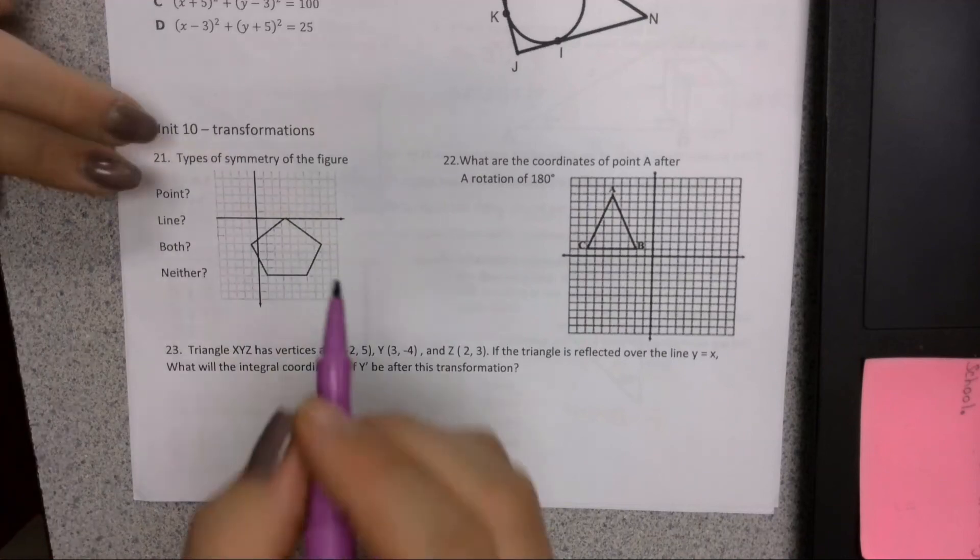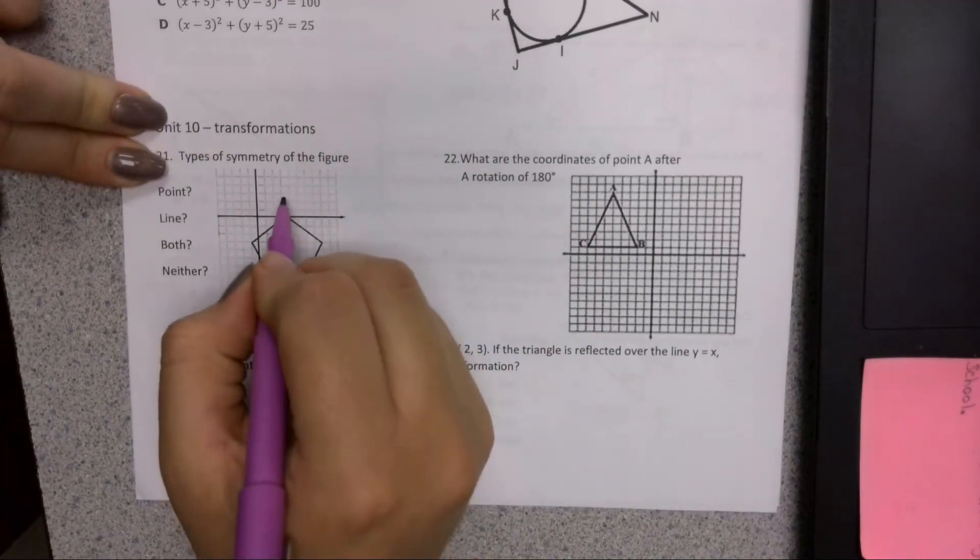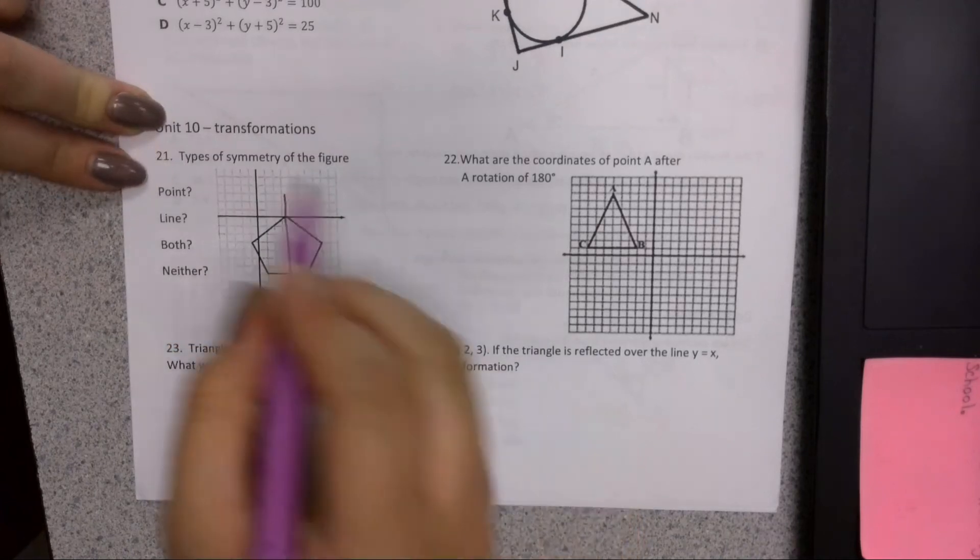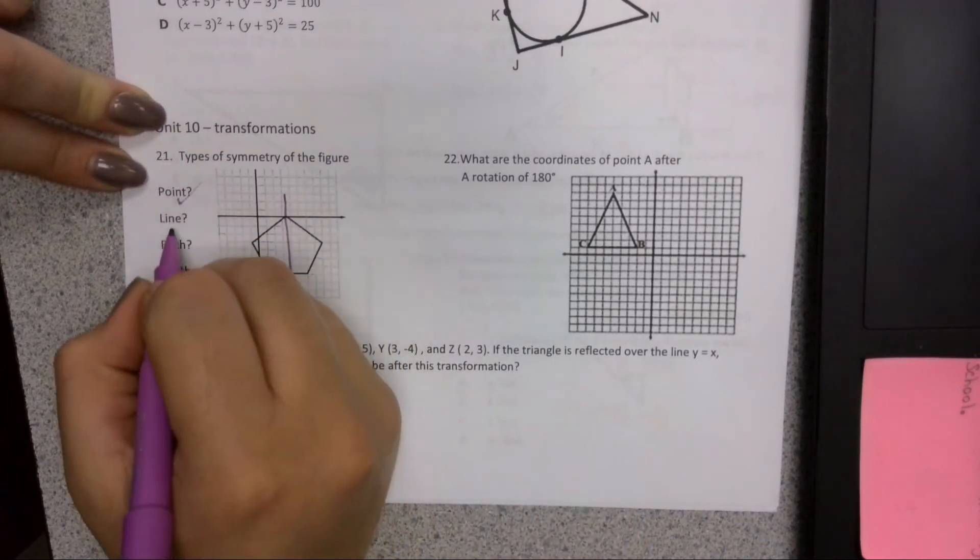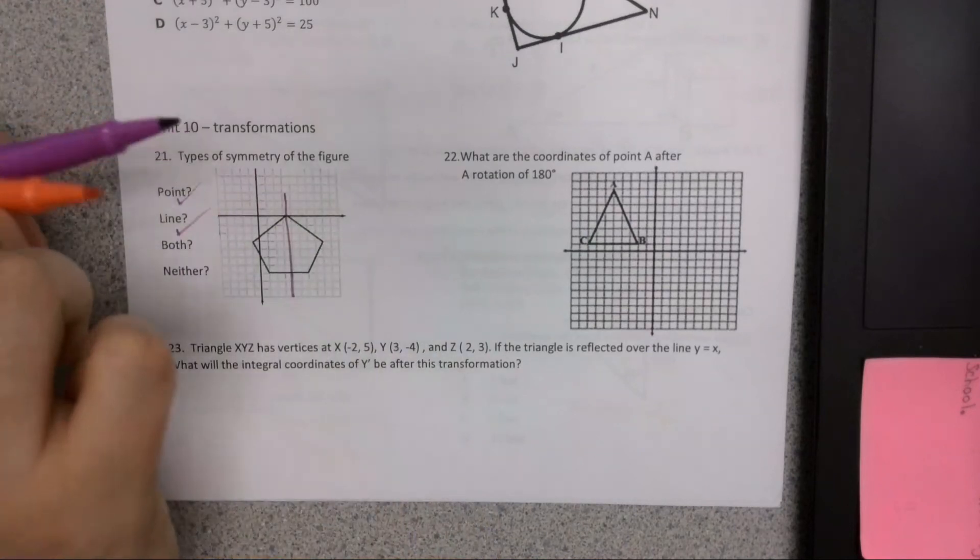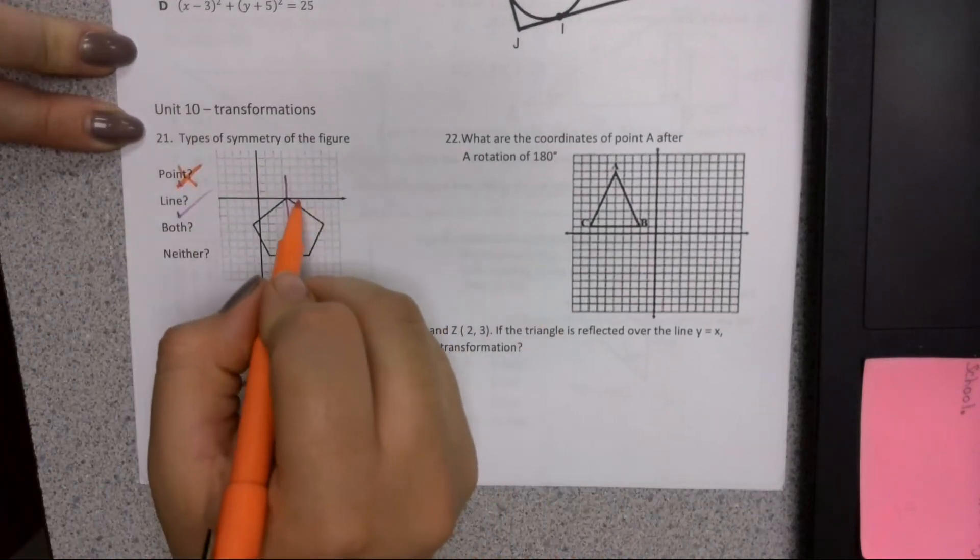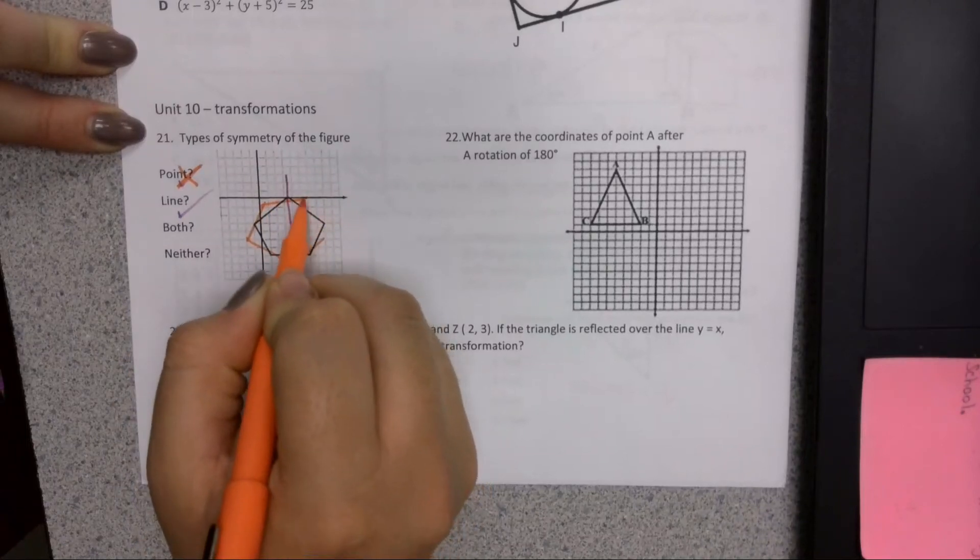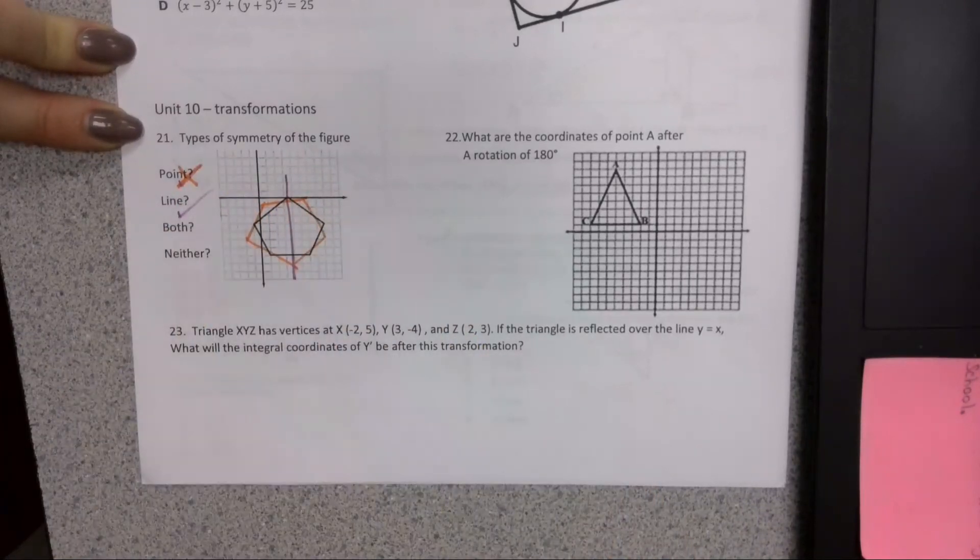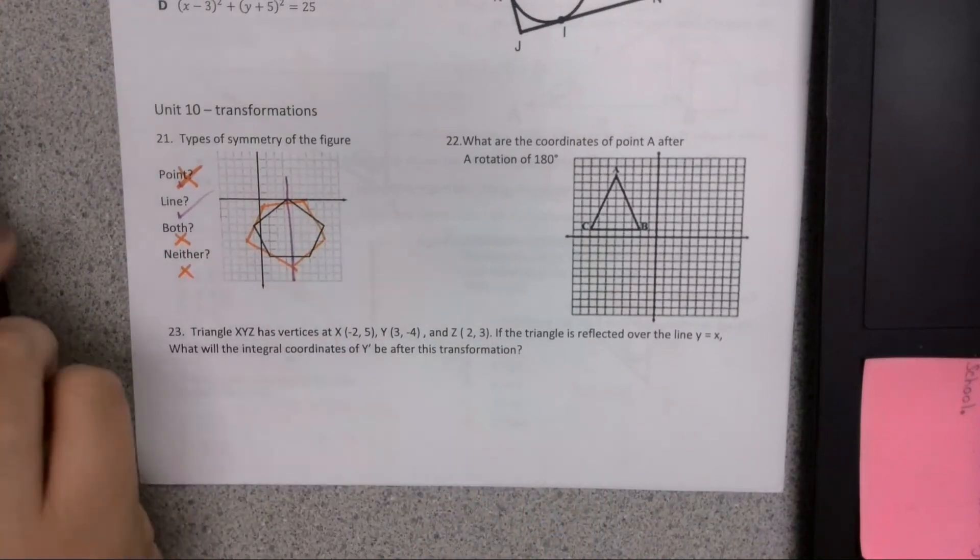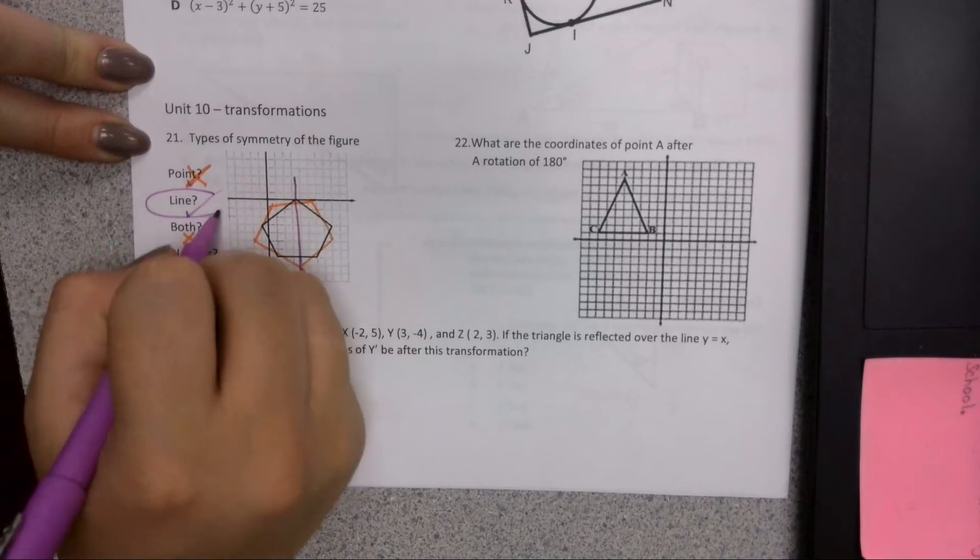Does it have line symmetry? Can you fold it? Can you fold it here? Sure can. It does have line symmetry. Point symmetry, it does not have point symmetry. If I flipped this upside down, we would be looking at something like this, so it won't have point symmetry. So neither does it have both, neither does it have neither. Line symmetry is our best option.